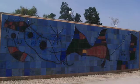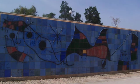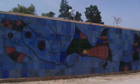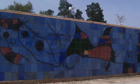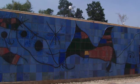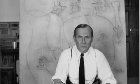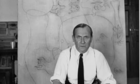He used these tiles to make enormous murals that can be found all over the world. In his life, Miro made 2,000 paintings, 500 sculptures, 400 ceramics, 5,000 drawings, and 1,000 prints.